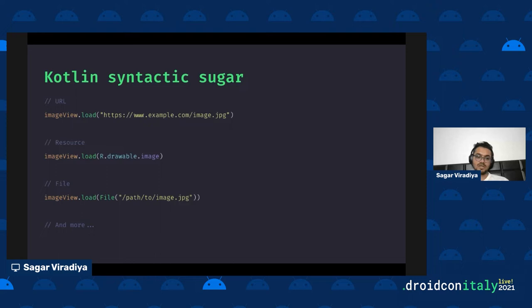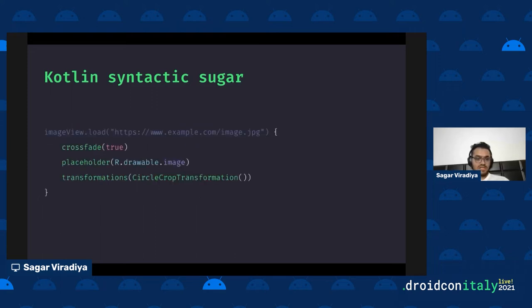For Kotlin users, it's fairly simple — there's an extension function on ImageView called `load`. You pass in the image source, which could be a URL, local resources, or a file object. Under the hood, the `load` function does the heavy lifting: it creates the ImageRequest and passes it to the ImageLoader. If you need to specify things like animation, placeholder, or transformation, you just pass a trailing lambda — which is a lambda with receiver on ImageRequestBuilder — and the library will create the ImageRequest with all the options you provide within that lambda.